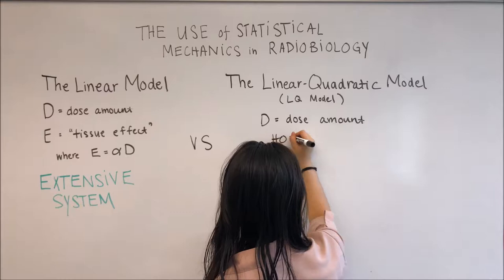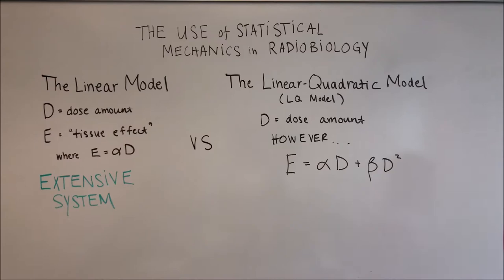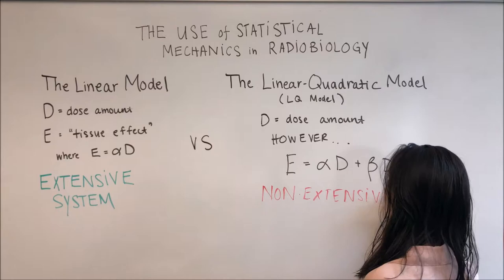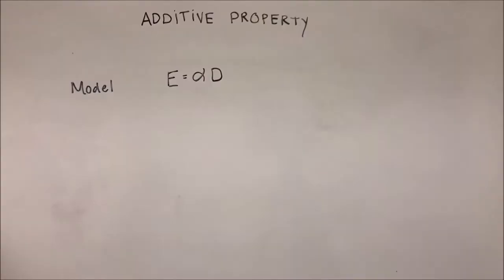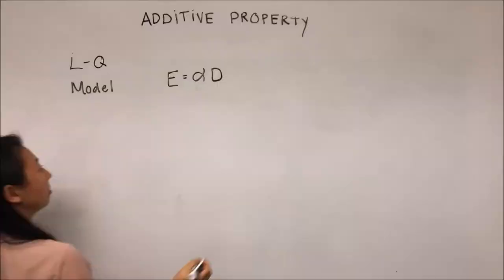A quadratic term needs to be added so that the tissue effect is now more accurately defined by the linear quadratic model. If we try to verify the same additive principle that is valid in the linear model, we run into some trouble.